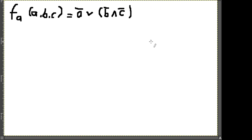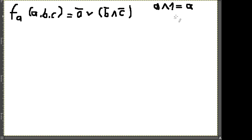Zum Beispiel: ich habe eine Variable a und dann a und 1. Das darf ich immer machen – irgendwas und 1 entspricht immer nur dem Wahrheitswert von a. Ich darf auch ein Oder 0 machen. Außerdem: a oder a gleich a. Wenn ich eine Variable oder nochmal die gleiche Variable habe, ist sie nur dann true, wenn die Variable true ist.